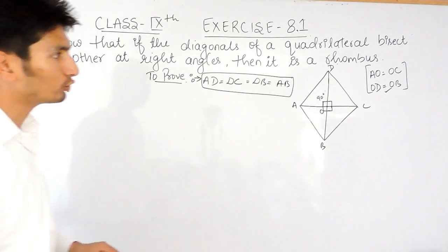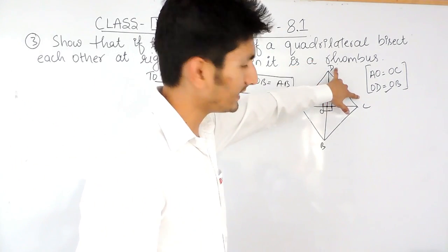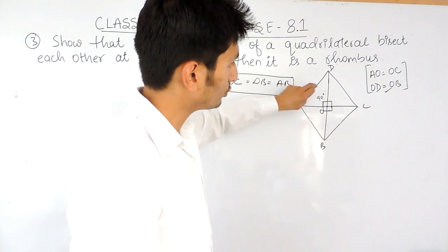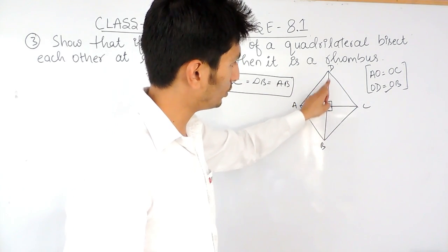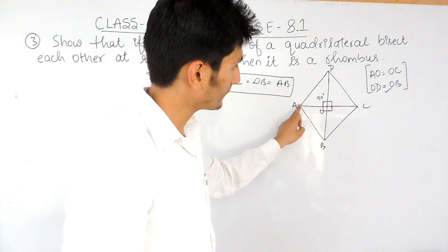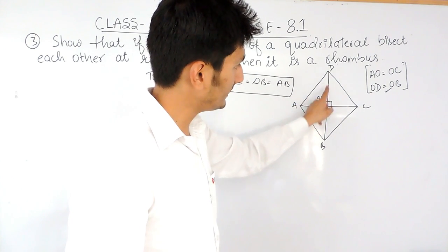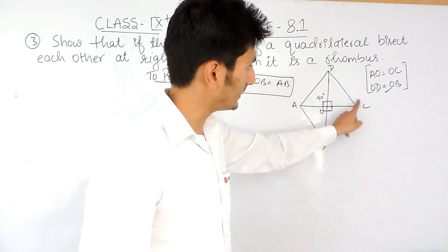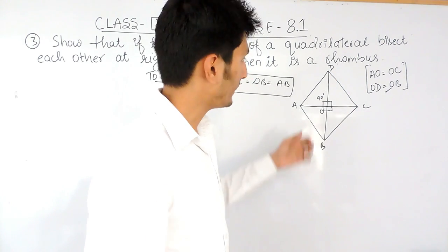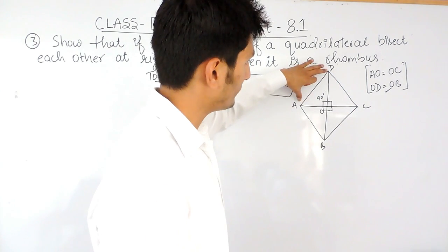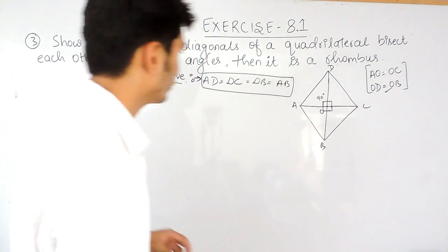How do we prove that one side equals another side? To do that, I have to prove that triangle AOD is congruent to triangle DOC. If these two triangles are congruent, then by CPCT, the corresponding sides will be equal.